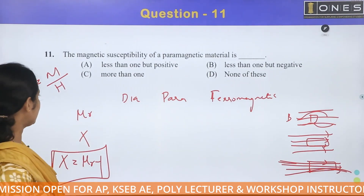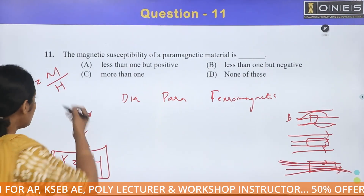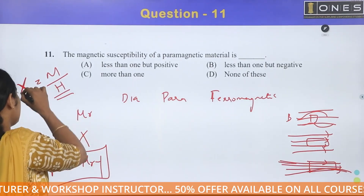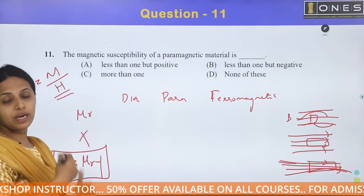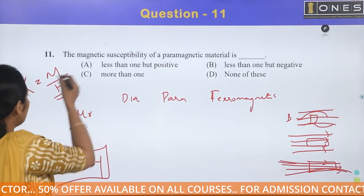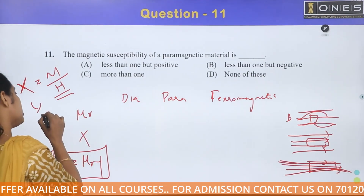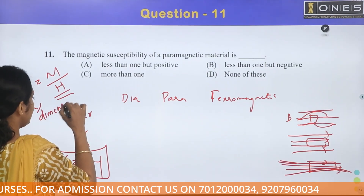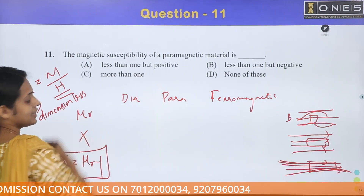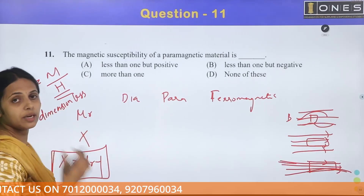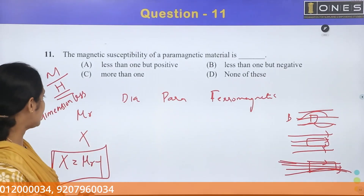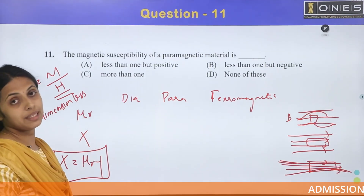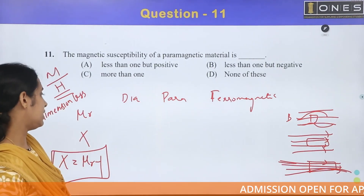The susceptibility is generally M divided by H. That is the ratio of magnetization to magnetic field intensity — M by H. The susceptibility is a dimensionless quantity, and relative permeability is also a dimensionless quantity.